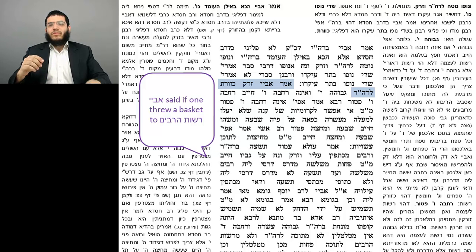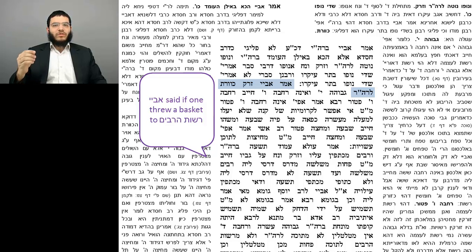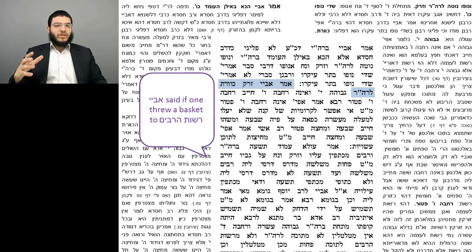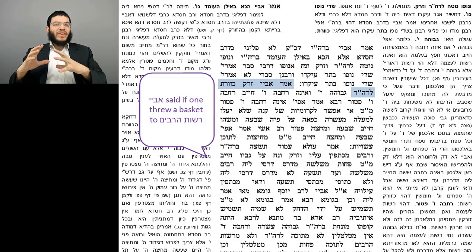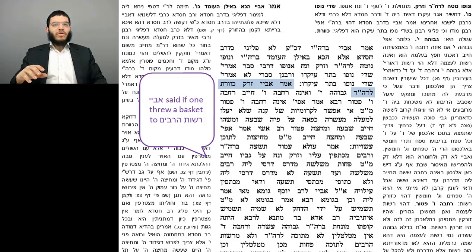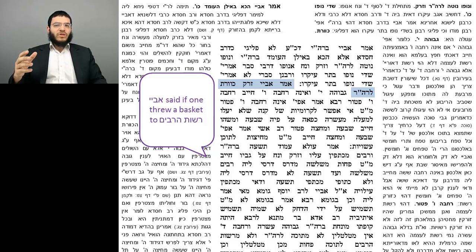On Daf Amat Aleph we presented a baraisa that spoke about the four reshuyos of Shabbos: a reshus hayachid, a reshus harabim, a karmelis, and a makom petur. From after that baraisa till this piece of gemara, we discussed the first part of the baraisa that spoke about reshus hayachid, reshus harabim, and karmelis — the reshuyos where there is an issur involved in carrying by them.